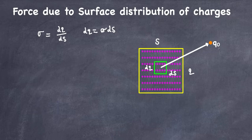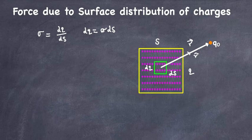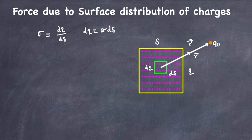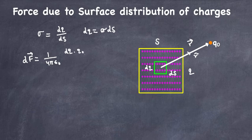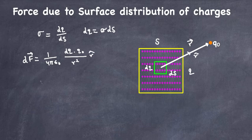The electrostatic force on charge q₀, placed at distance r from this small surface element, with unit vector r-hat representing the direction — the force dF due to this small element dS — is given by Coulomb's law: dF = (1 / 4πε₀) · (dQ · q₀ / r²) · r-hat.